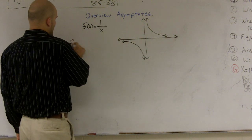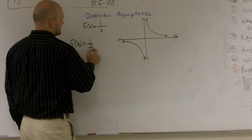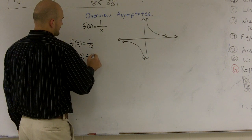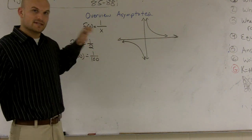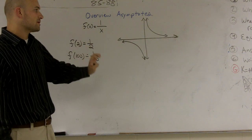You can see if we did like f of 2, we'd be left with 1 half. And if we did f of 100, we'd be left with 1 over 100. And as we keep on adding numbers, this graph is going to keep on getting smaller and smaller and smaller. Your values are going to get smaller and smaller.